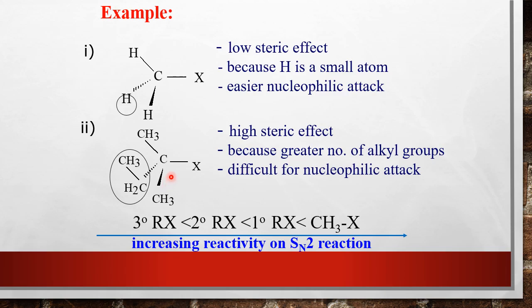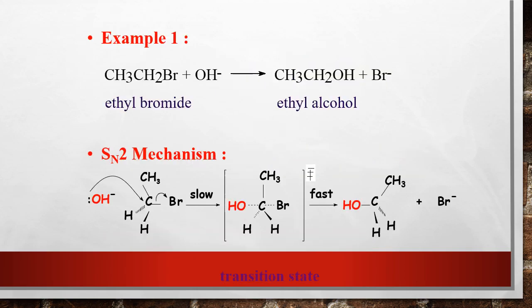Even if the alkyl is primary, if there is a bulky group, it cannot undergo SN2 — it must undergo SN1. SN1 is preferred for tertiary haloalkane and haloalkane with high steric effect due to greater number of alkyl groups or bulky groups, making backside attack difficult. SN2 is preferred for low steric effect — primary haloalkane. For methyl haloalkane, SN2 works best (highest reactivity in SN2).